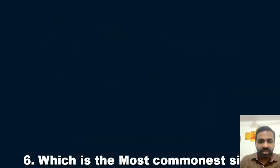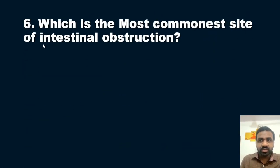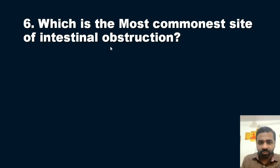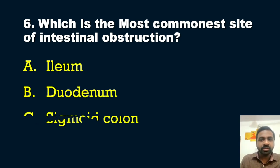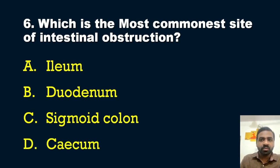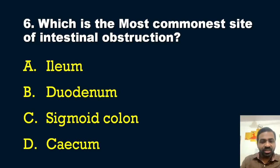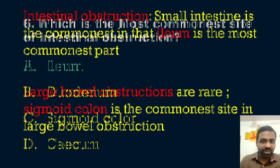The sixth question: which is the most common site of intestinal obstruction? Options: A — ileum, B — duodenum, C — sigmoid colon, D — cecum. The answer is option A — ileum. Think about whether obstruction occurs more in the small or large intestine — the small intestine is most common, and within that, the ileum is the most common part.